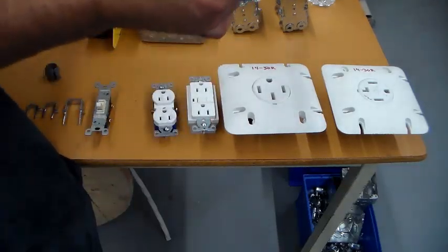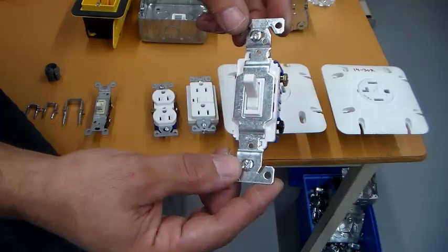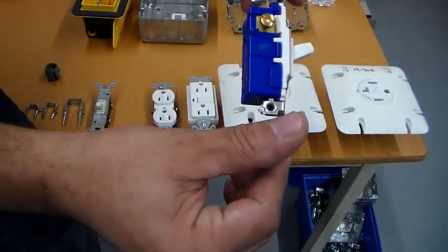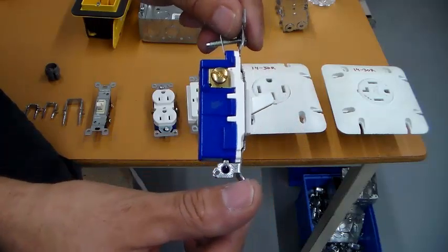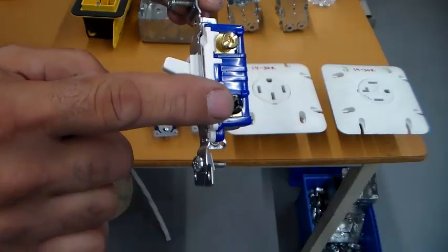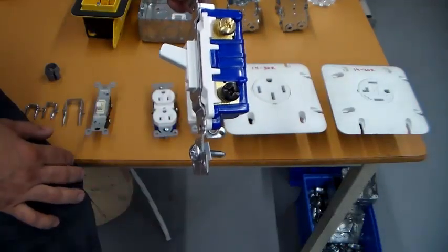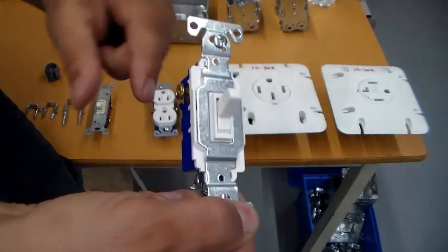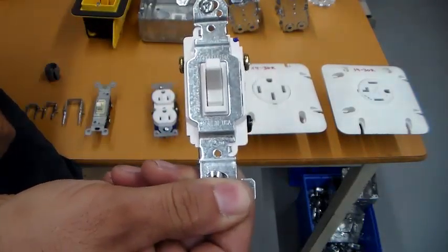In the three-way switch, you'll notice that there are screws on both sides. There's two brass screws on the top, and a black screw at the bottom. The black screw indicates the common point of the three-way switch. The two travelers in a 14.3 wire go on the brass screws.